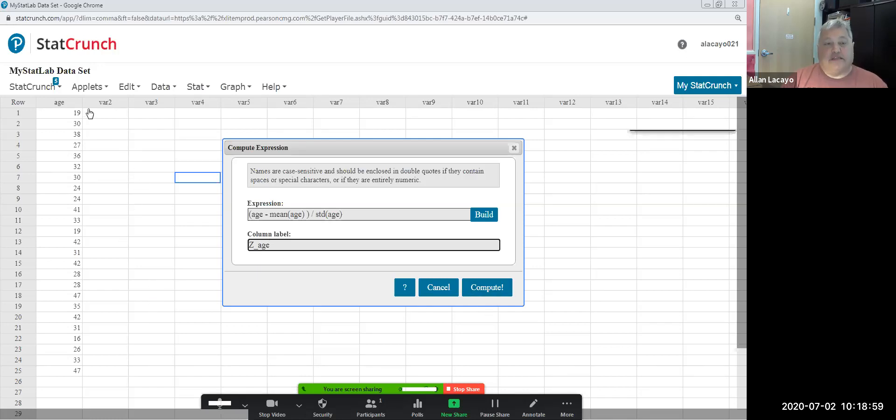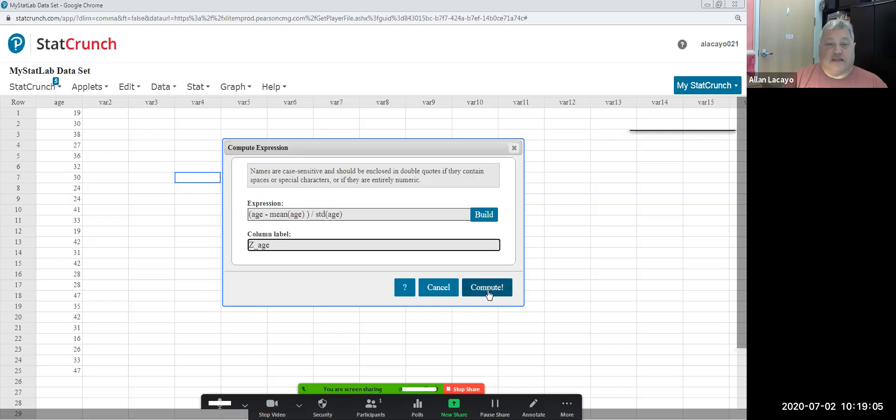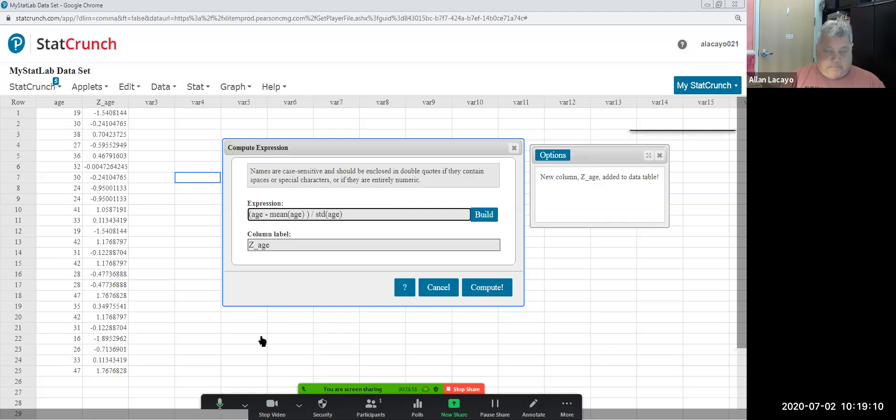When I compute, what will happen is that where it says var 2, you will see a population of z-scores, one for each number in the data. So upon computing this particular formula, you get all these different values.